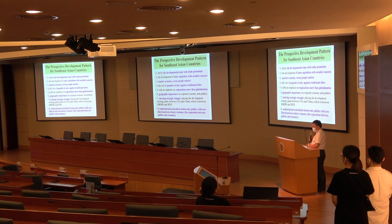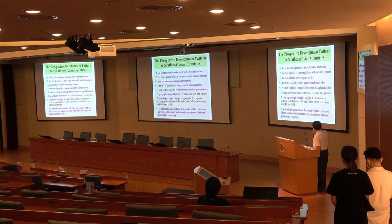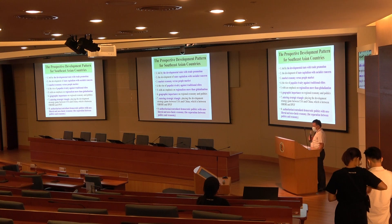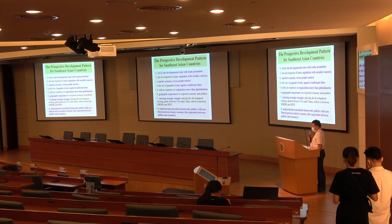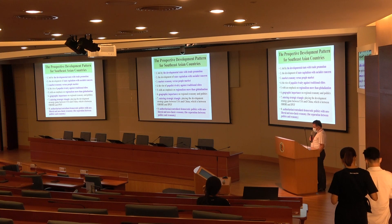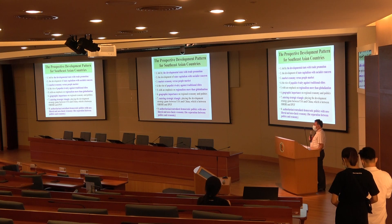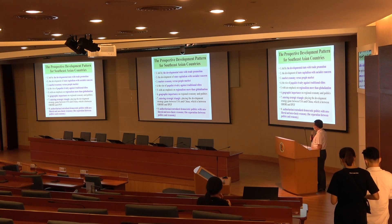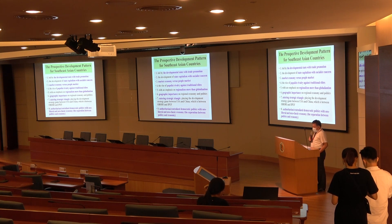This is the final part with my remarks about the upcoming development patterns for Southeast Asian countries. First, Southeast Asian countries are still shaped by the developmental state with trade promotion still working its way. Second, the development of state capitalism with socialist concerns — is that possible to happen in Southeast Asian countries? Third, market economy versus people's economy and how the state policy can balance these.